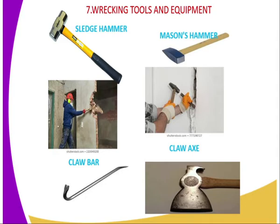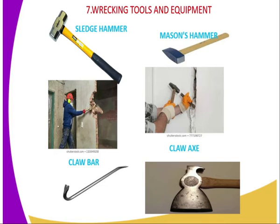The seventh category is the racking tools and equipment. There are several examples used during demolition work whenever you want to demolish a certain structure. The first is the sledgehammer — you can see an image of a person putting down a wall. Then we have the mason's hammer, also a demolishing tool used by the mason during construction. We also have the crowbar, used when demolishing especially wooden structures, and the crow axe, which can also be used when demolishing structures on the farm.